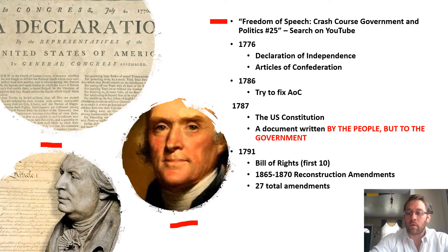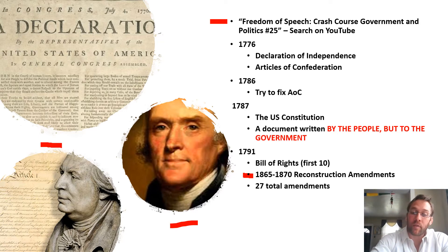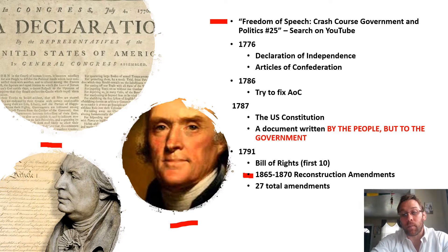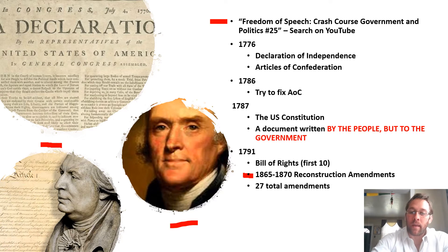Between 1865 and 1870, we passed three amendments — the 13th, 14th, and 15th — known as the Reconstruction Amendments, after the Civil War. The 13th Amendment abolished slavery. The 14th Amendment gave free individuals due process and habeas corpus, the full rights of citizens. The 15th Amendment gave all free citizens the right to vote. Part of the problem is we defined citizens as free men in the 14th Amendment, so women weren't included until the 19th Amendment about 50 years later.